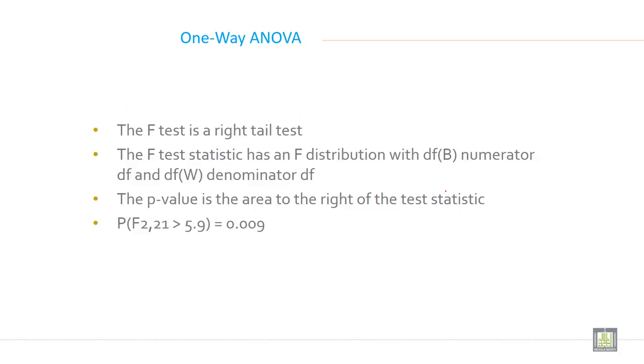The F test is a right-tail test. The F test statistic has an F distribution with df(B) as the numerator degrees of freedom and df(W) as the denominator degrees of freedom. The p-value is the area to the right of the test statistic.